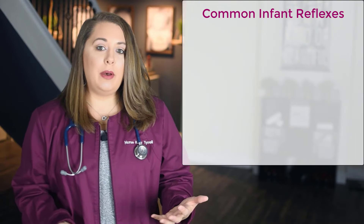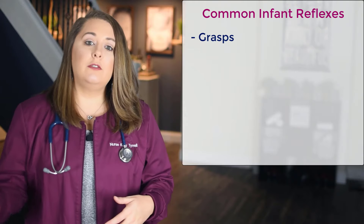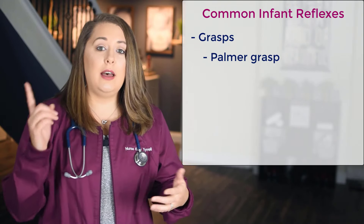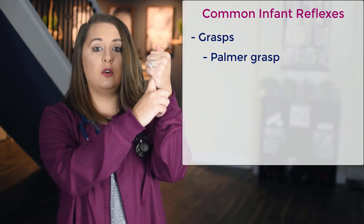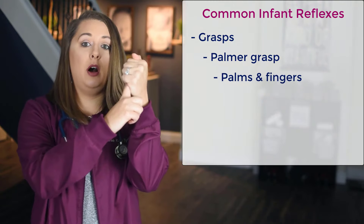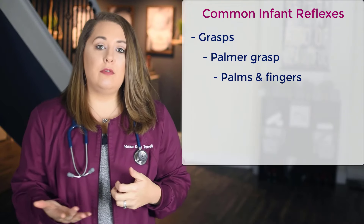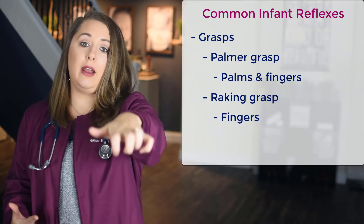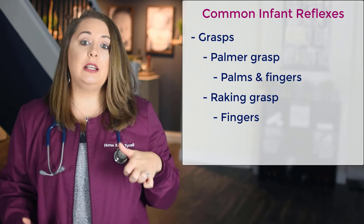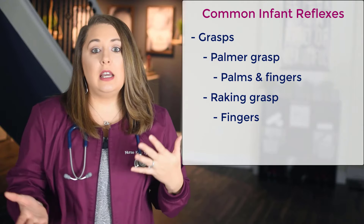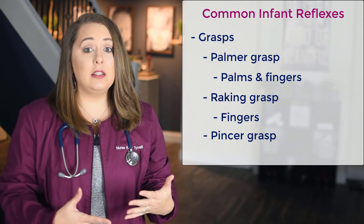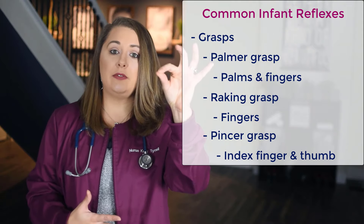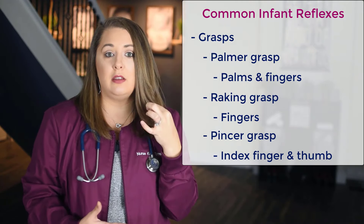There are three different types of grasps you're going to see within the first year. First is the palmar grasp, where you place your finger in the baby's hand and they encompass your whole hand with their palm and fingers. Next, at around four to six months, you'll see the raking grasp, where infants use their fingers to rake and scoop things up towards them. And around nine to ten months, you'll see the pincer grasp, where the infant pinches objects with their index finger and thumb to pick things up and bring them to their mouth.